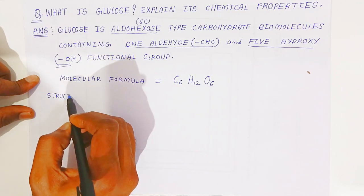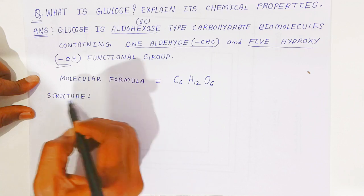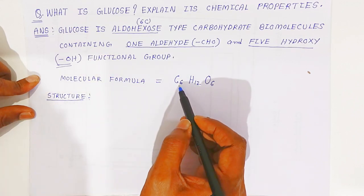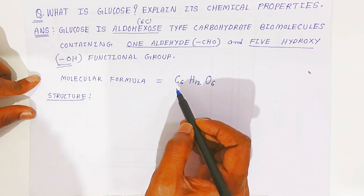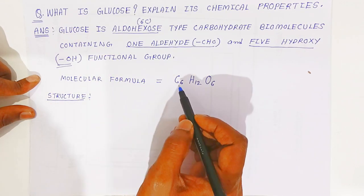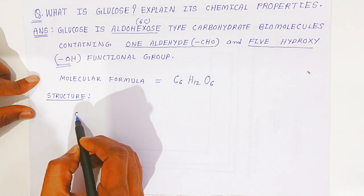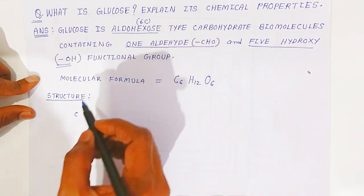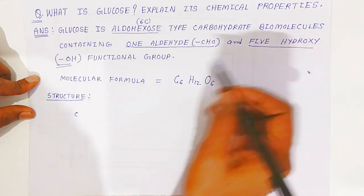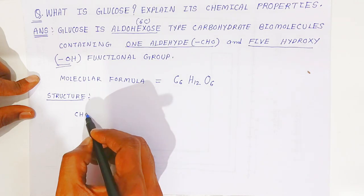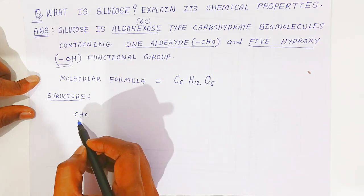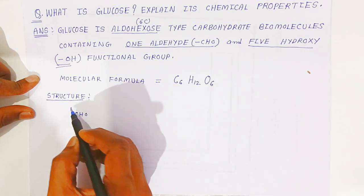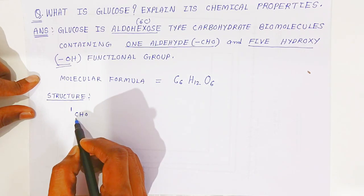Now we are going to see the structure of glucose. It contains six carbons, so we draw a chain of six carbons. Because it is an aldehyde sugar, the starting functional group will be an aldehyde — aldehyde is always present at the terminal position, so we write the aldehyde group containing one carbon at the top.